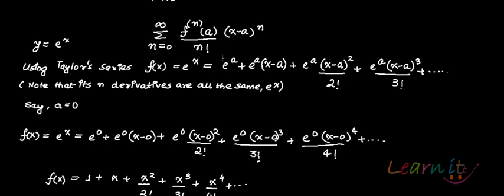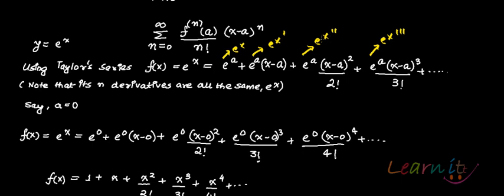To be explicit: the first derivative of e^x is e^x, the second derivative is also e^x, the third derivative is also e^x, and so on — all n-th derivatives are equal to e^x. This is the key property that makes the Taylor expansion of e^x particularly clean.